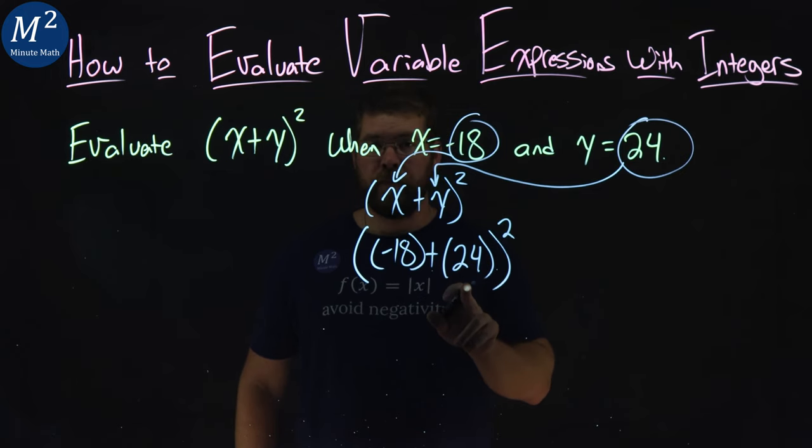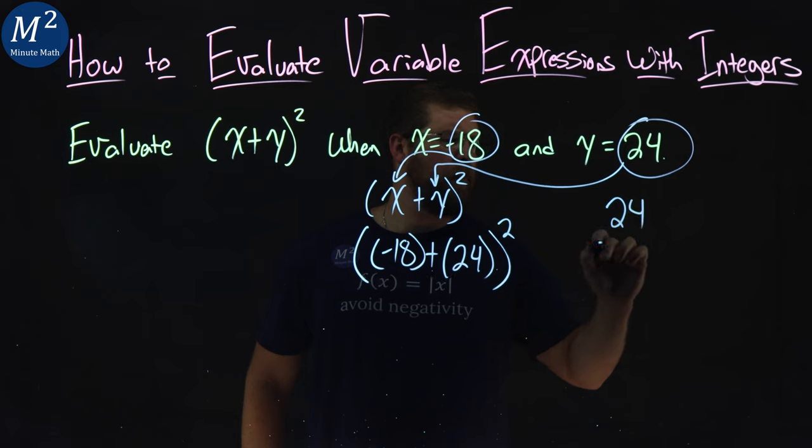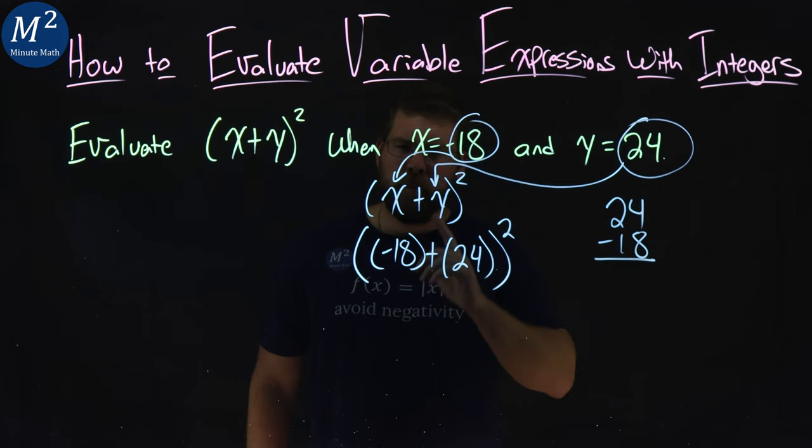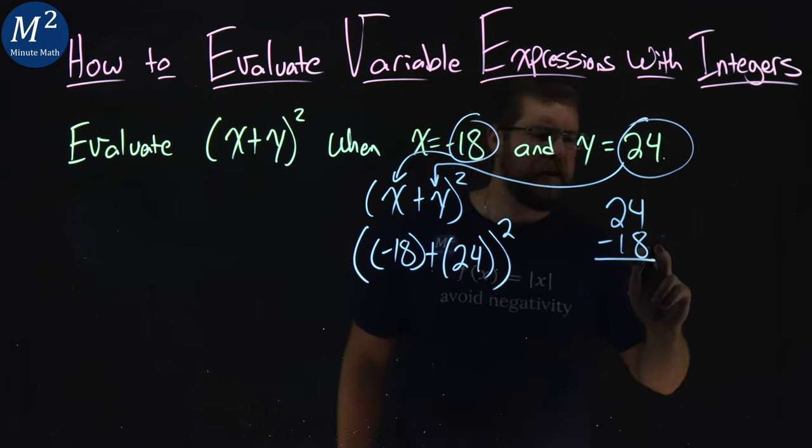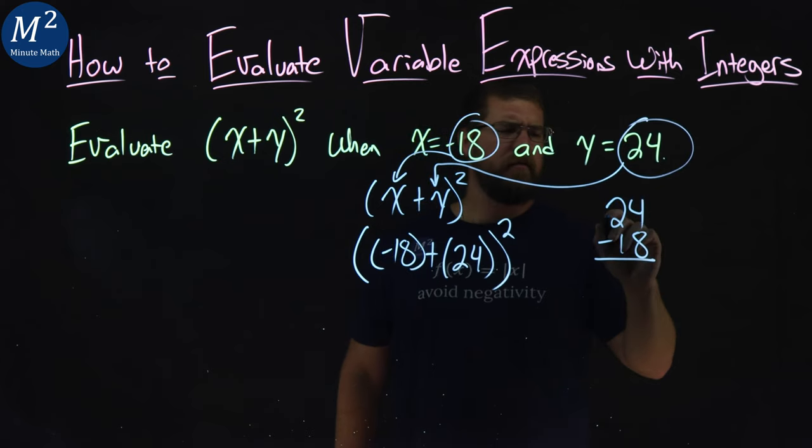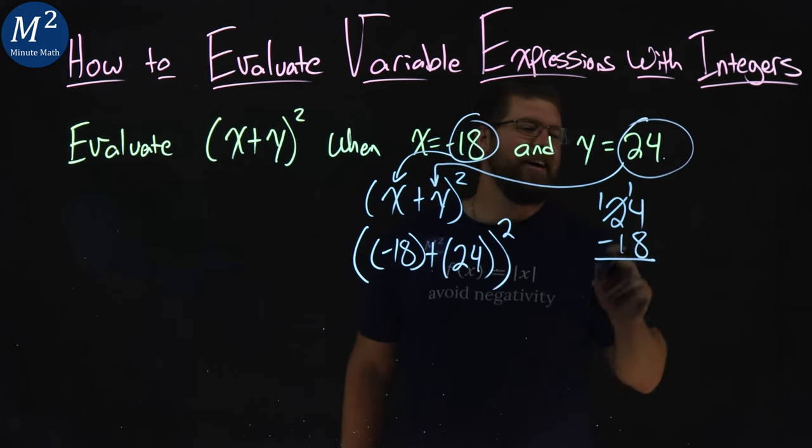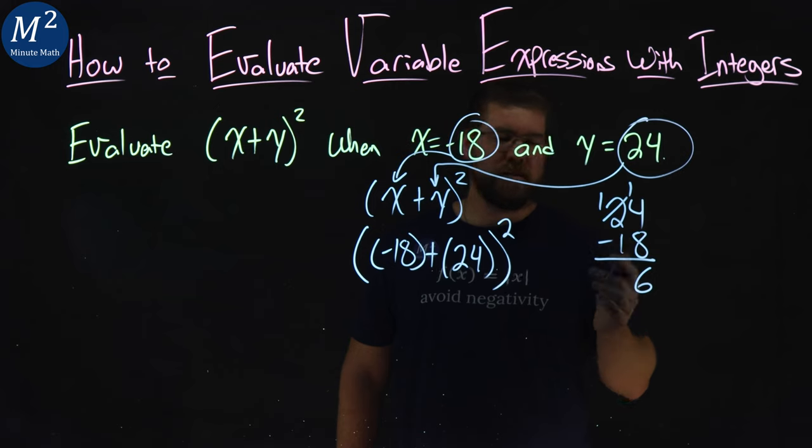Negative 18 and 24. That's the same thing as saying 24 minus 18. It might be a little easier to see. 4 minus 8, we really can't do that. So we can borrow a 2. 2 becomes a 1, and we have a 14. 14 minus 8 is 6, and 1 minus 1 is 0.